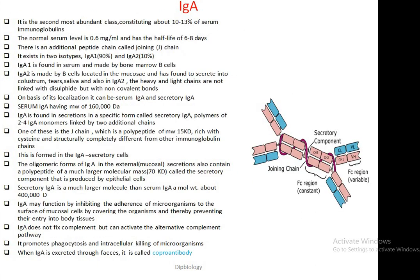The third class is IgA. It is a dimeric molecule; with the help of joining chains, two monomers can attach to each other. One important feature is that in the case of IgA, the light chains and heavy chains are not attached with each other with the help of disulfide bonds; instead, they are attached by other kinds of covalent bonds.